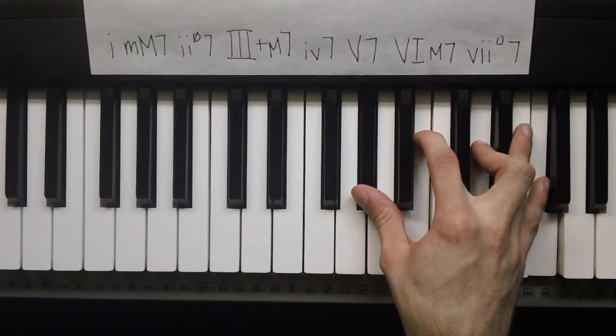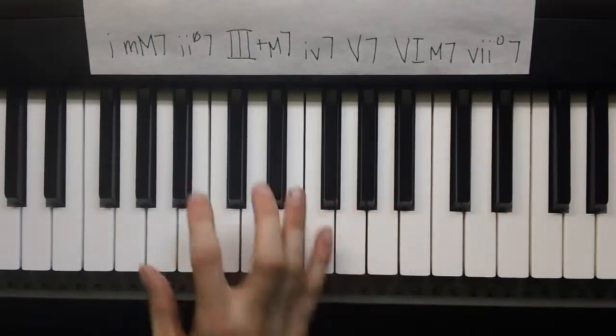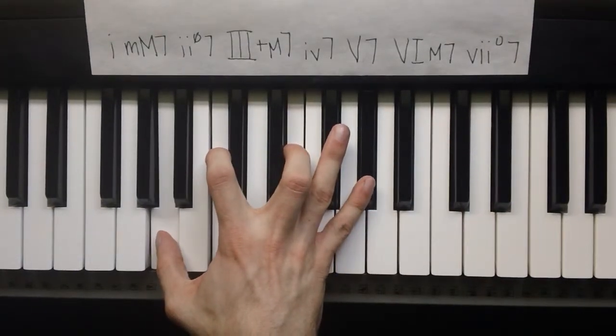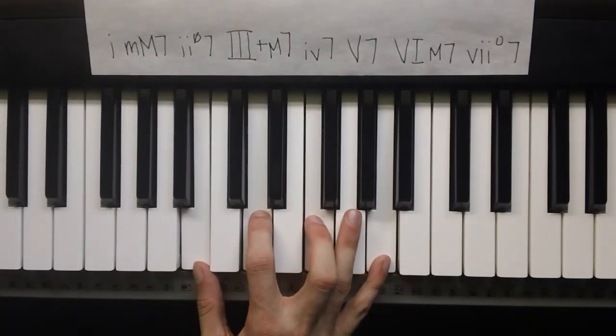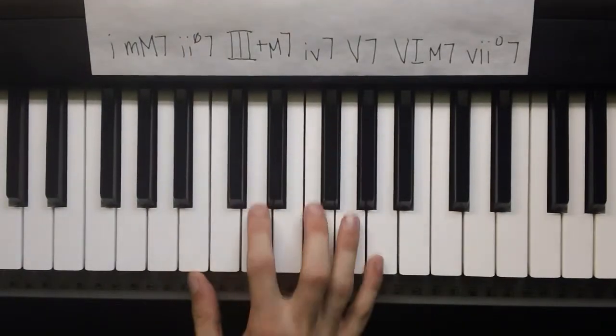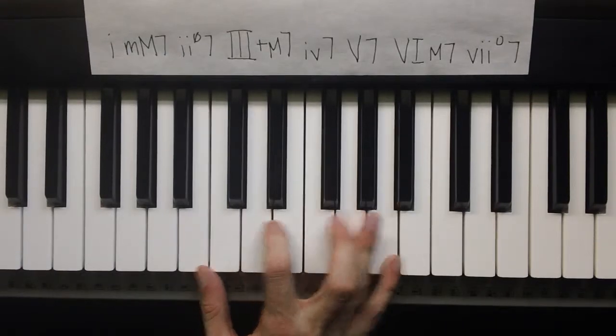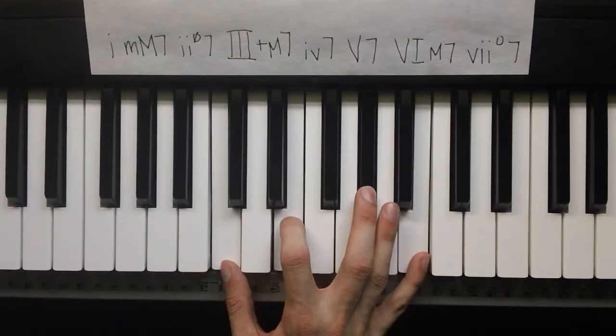So we learned three new 7th chords. We got the minor major 7th, and we'll just go through them. Minor major 7, this is a half diminished 7, this is the new one, this is an augmented major 7, built on the 3rd note.